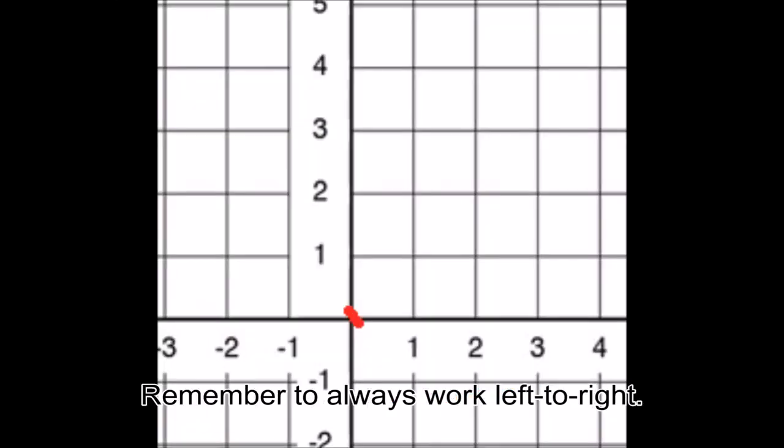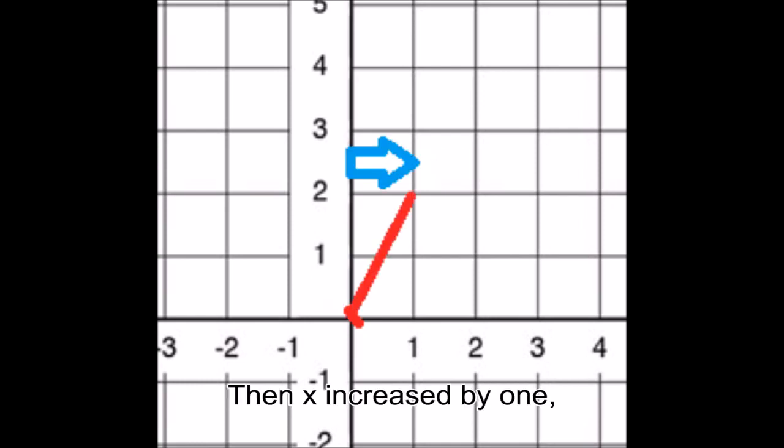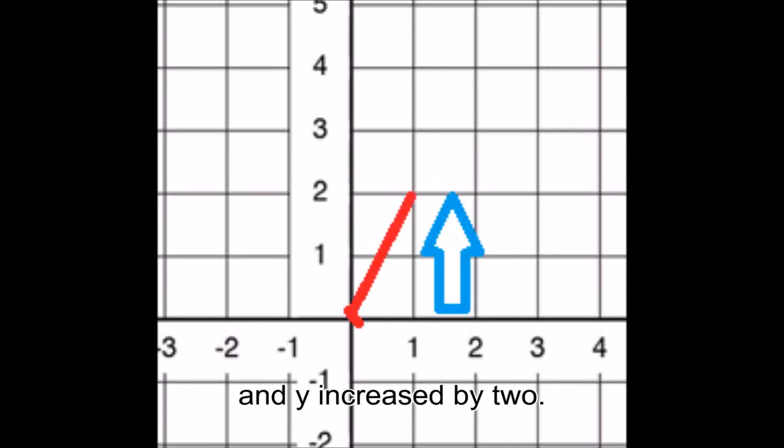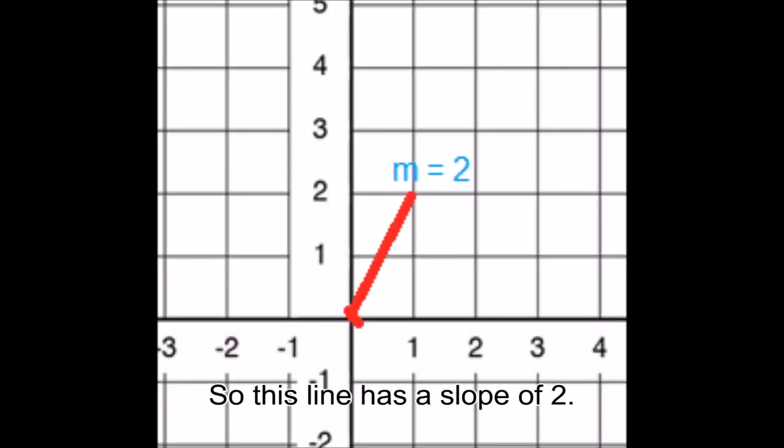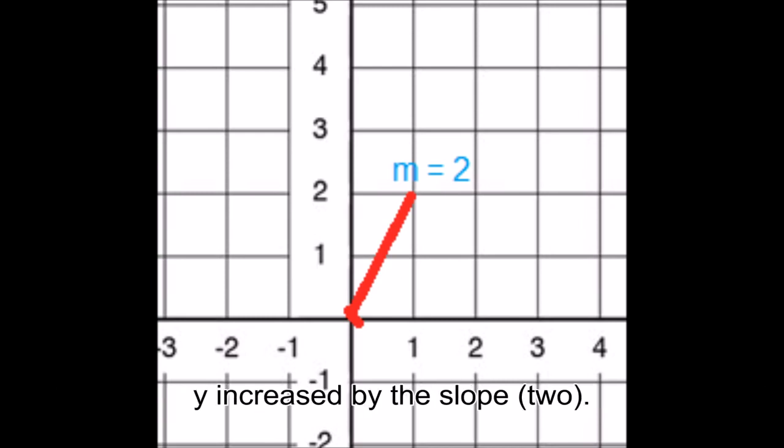Remember to always work left to right. If the first point on the graph is 0,0, and the second point is 1,2, then x increased by 1 and y increased by 2. Every time x increases by exactly 1, y increases by the slope. So this line has a slope of 2. If you look closely, you'll see that when x increased by 1, y increased by the slope.